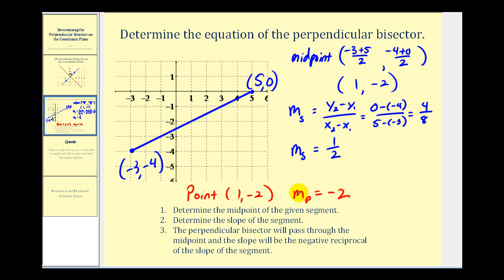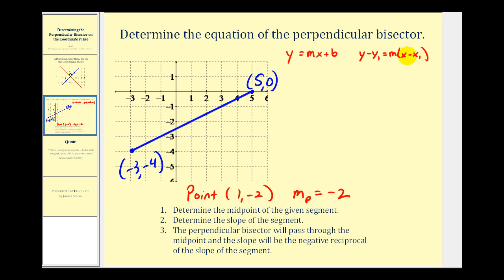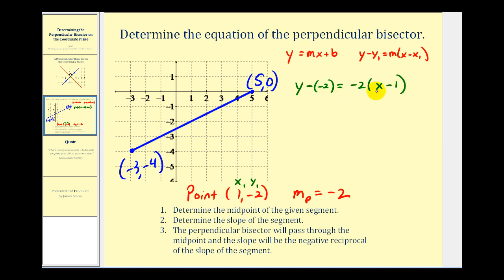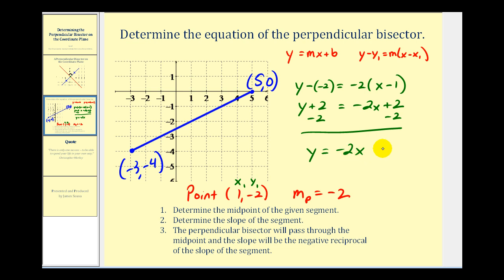Now we'll determine the equation of the line. To find the equation given the slope and a point, we can use the slope-intercept form or the point-slope form. Using point-slope form with slope m equals negative two, x₁ equals positive one, and y₁ equals negative two: y minus negative two equals negative two times x minus one. Solving for y, we get y plus two equals negative two x plus two, and subtracting two from both sides gives y equals negative two x. So we have a slope of negative two and a y-intercept of zero.